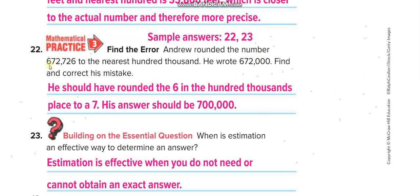Andrew rounded 672,726 to the nearest hundred thousand and wrote 672,000. Find and correct his mistake. He rounded to the thousands place, which is wrong. He should have rounded to the hundred-thousands place. The next digit is 7, which is more than 5, so the 6 becomes 7 and remaining digits become zeros. The correct answer is seven hundred thousand.